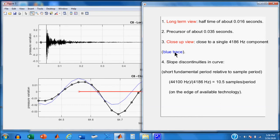So the long-term view, we have a half-time. Precursor is about 35 milliseconds. It's longer. And then we can have a sound of a pure 4186 hertz signal that doesn't have all the other things going on with it. And there it is. You mentioned the slopes and the discontinuity. And the fact that we're sampling at 44 kilohertz of a wave that's got a frequency of 4186 hertz, and that turns out to about 10 samples per period, which is not very many, which means we're kind of on the edge of the available technology.